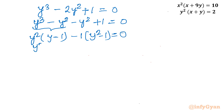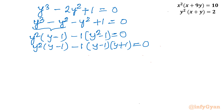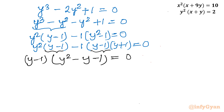Now applying the difference of two squares to (y² − 1): that becomes (y − 1)(y + 1). So the expression is y²(y − 1) − (y − 1)(y + 1) = 0. Taking (y − 1) common: (y − 1)(y² − y − 1) = 0. Setting each factor to zero: from the first, y − 1 = 0; from the second, y² − y − 1 = 0.